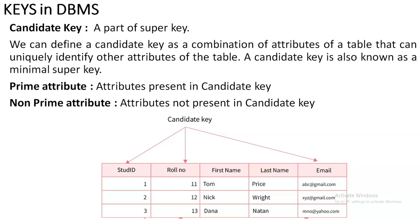You can go with one single column or the combination of one or more columns. The Candidate Keys here are StudentID, RoleNumber, Email, and also combinations such as StudentID plus RoleNumber, StudentID plus Email, and RoleNumber plus Email. So, the Candidate Key is whichever column is unique in the table — either a single column or a combination of unique columns.